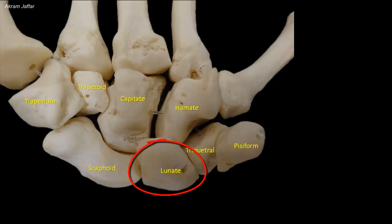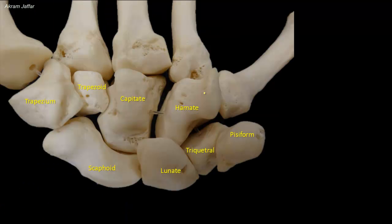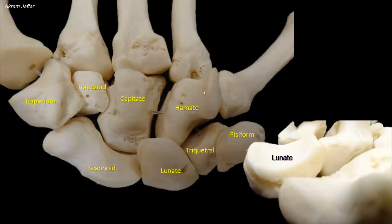The lunate bone is moon-shaped, as its name indicates — luna means moon. The lunate articulates with the distal end of the radius at the wrist joint. The area for articulation is quadrangular. The lunate is the carpal bone most commonly dislocated. When it dislocates, it is displaced anteriorly.